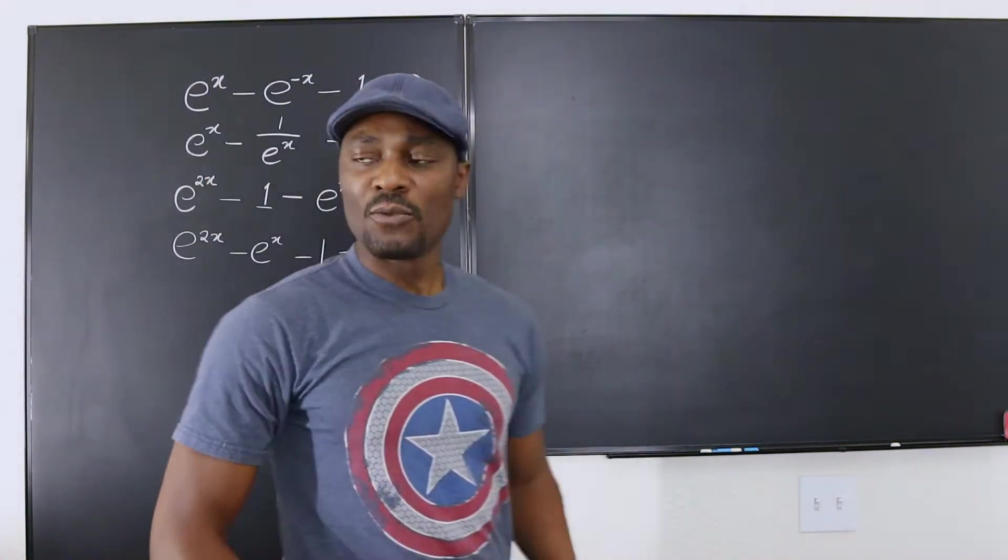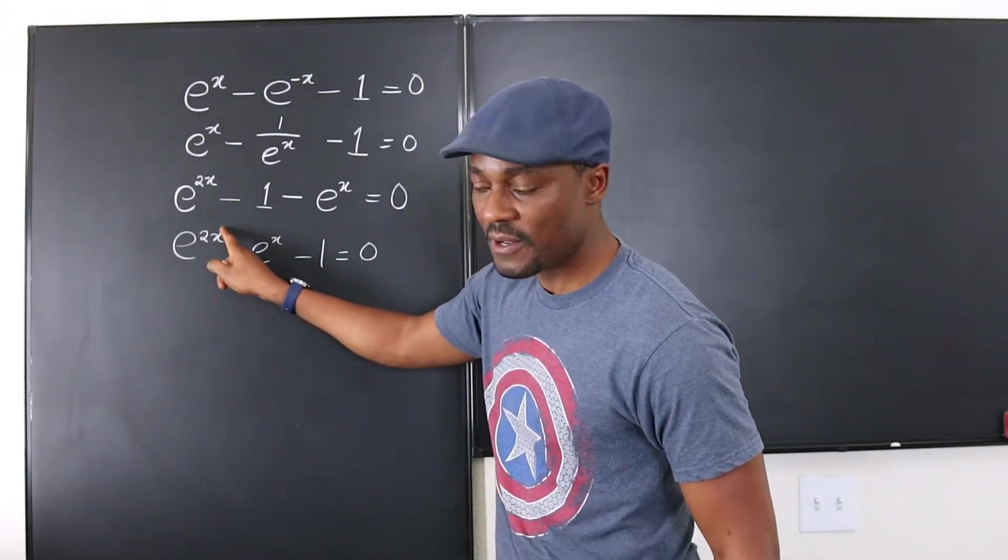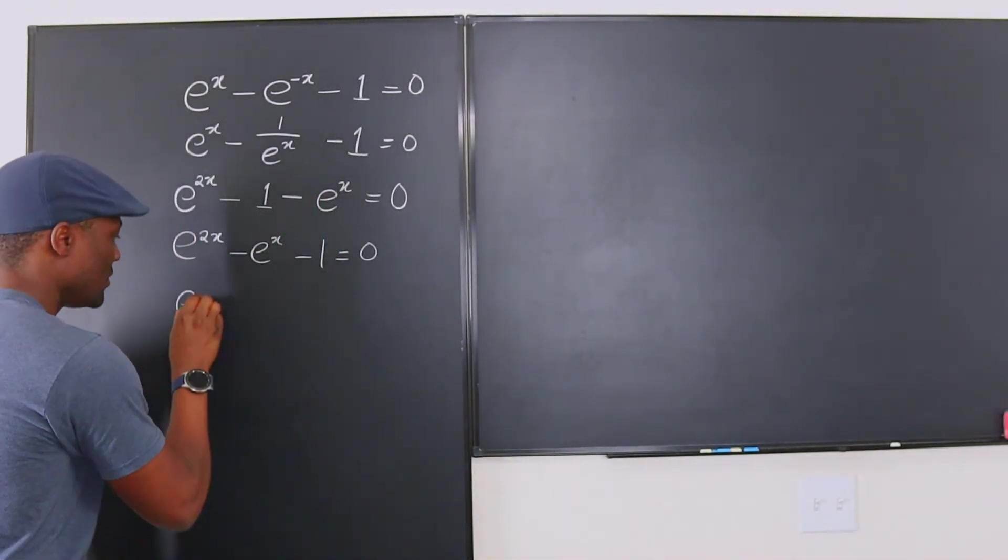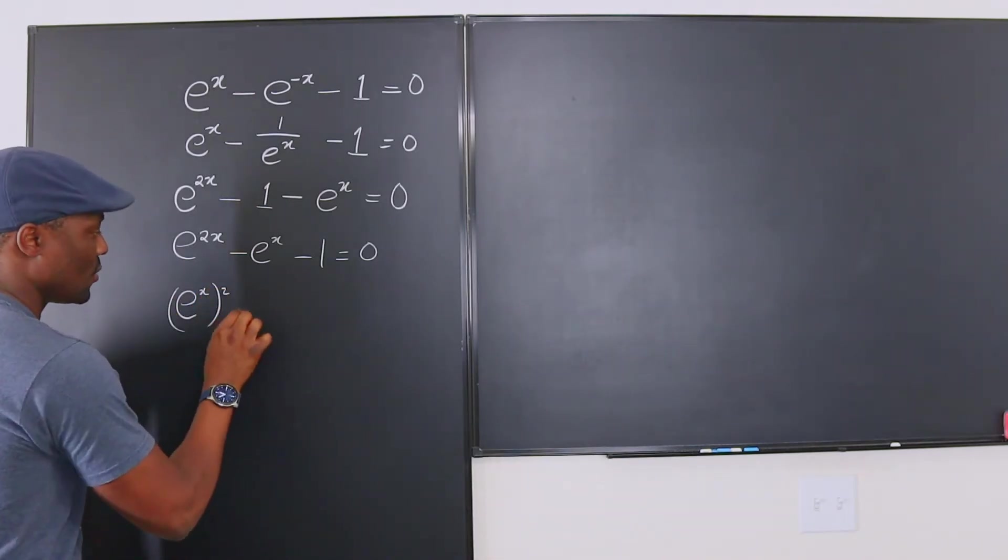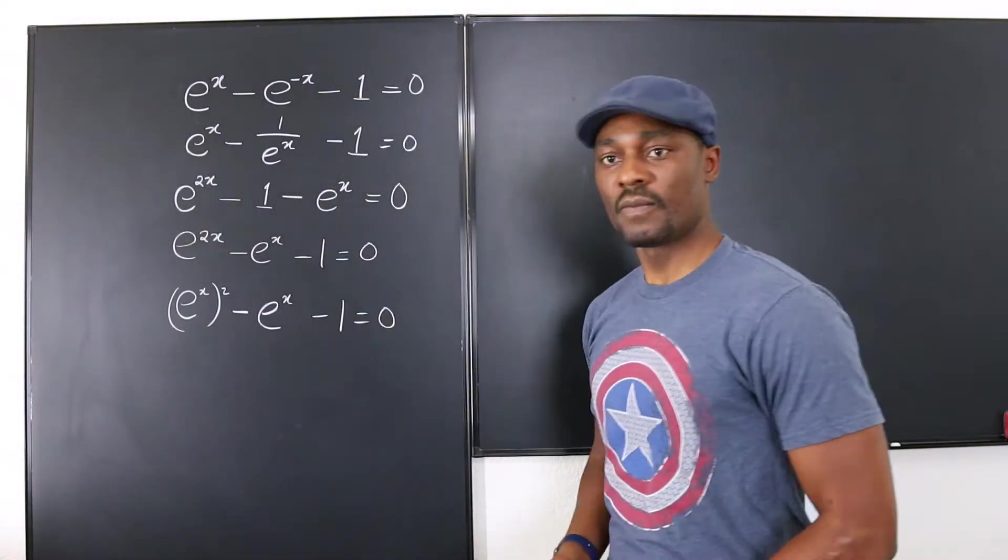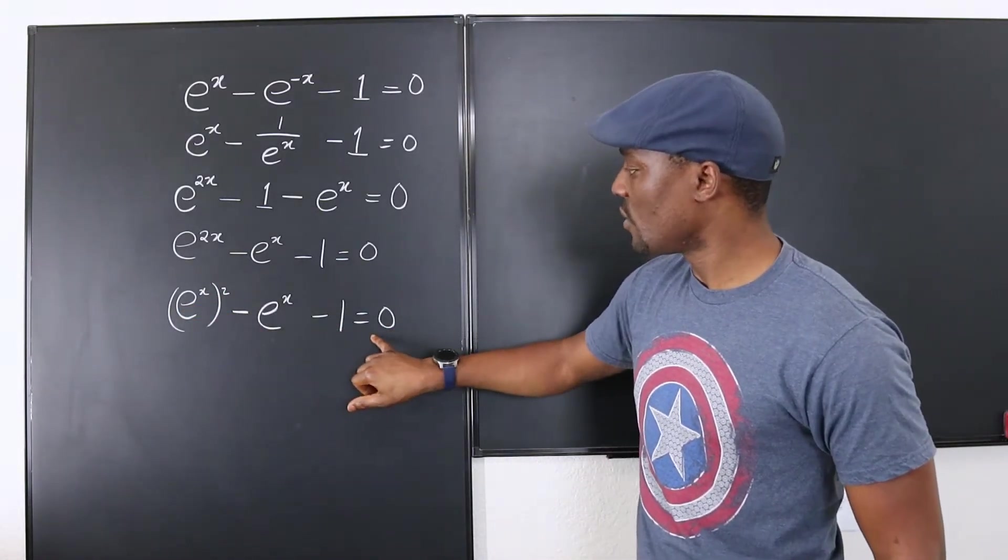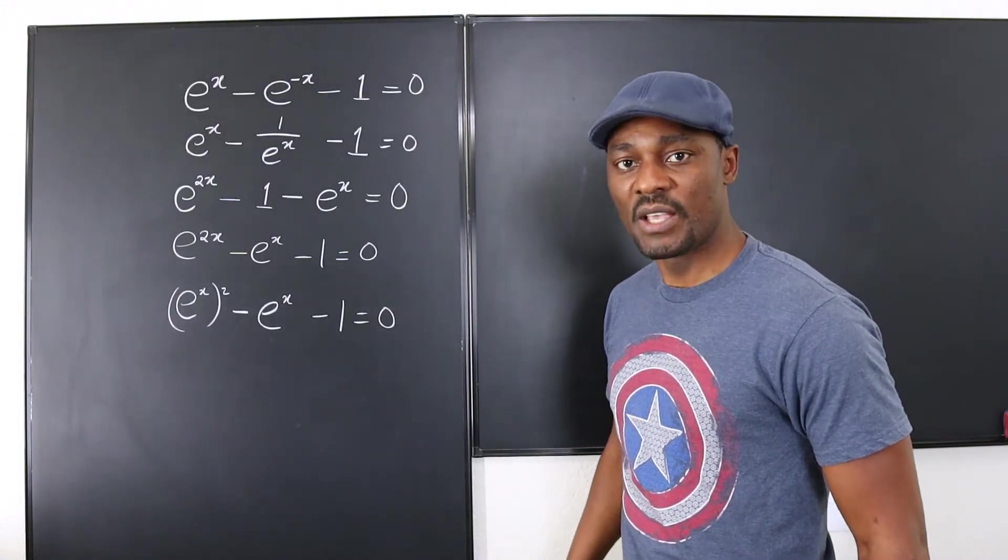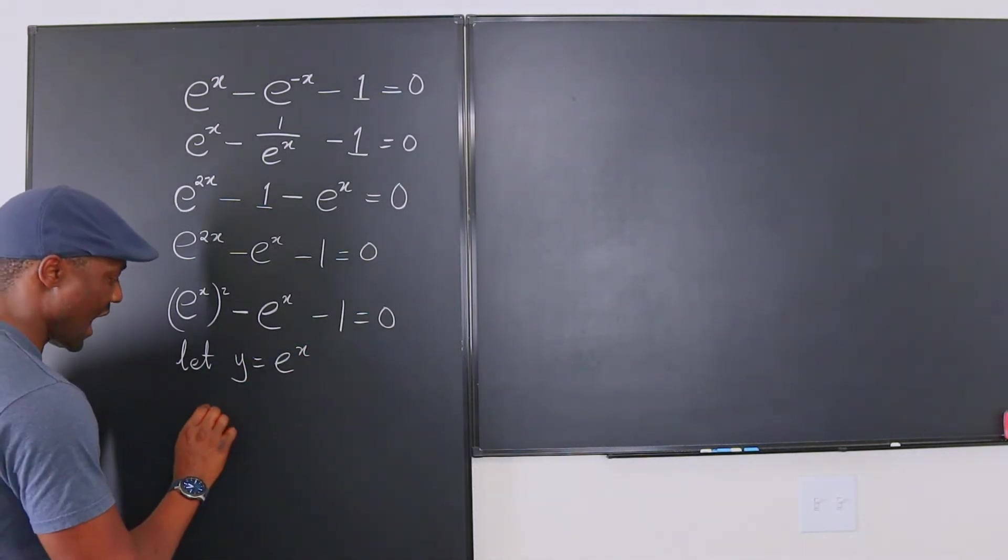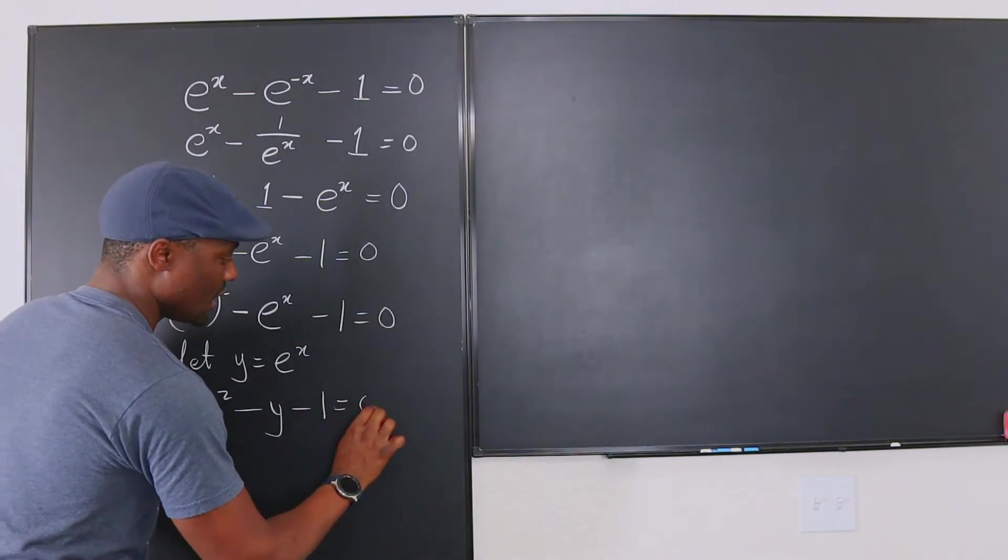Now, so where does the quadratic equation show up? Well it shows up here because this is something squared. You can see this is e to the x. If you square it, because I can rewrite this to be e to the x squared minus e to the x minus 1 equals 0. So right now this is as if you're saying y squared minus y minus 1 equals 0. It looks like a quadratic equation. So I can actually say let y be equal to e to the x which means that I can write this as y squared minus y minus 1 equals 0.